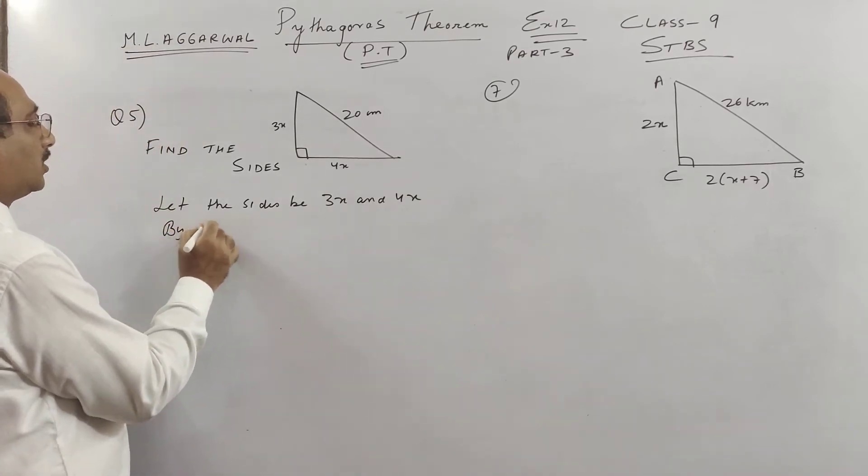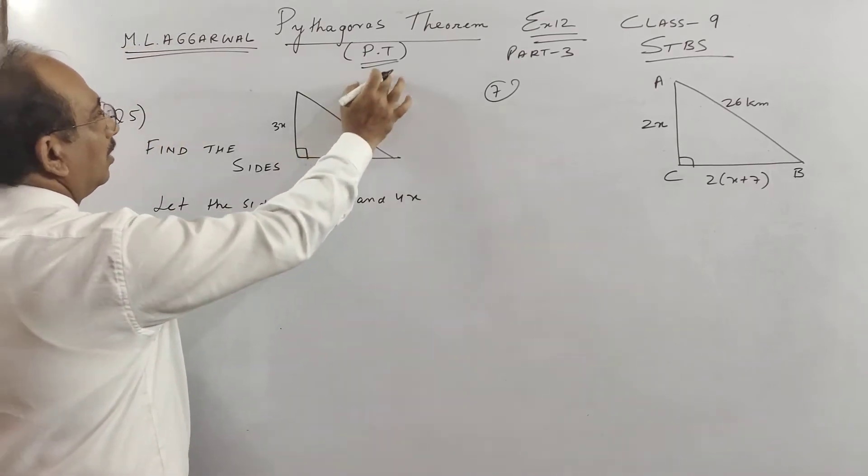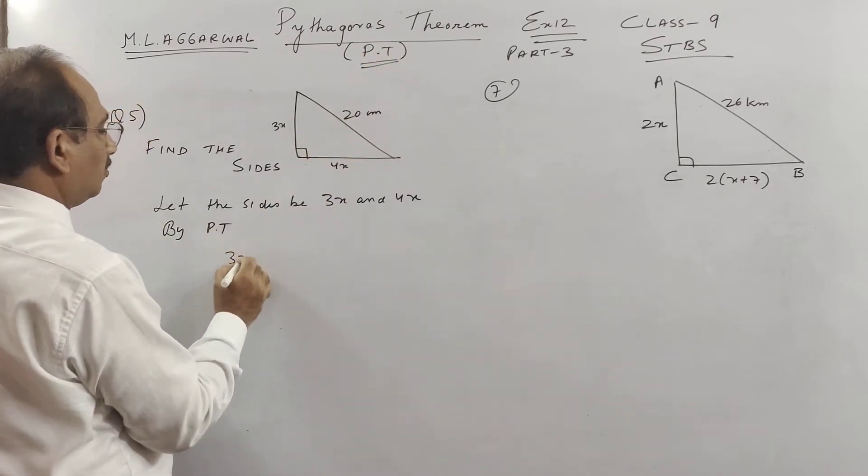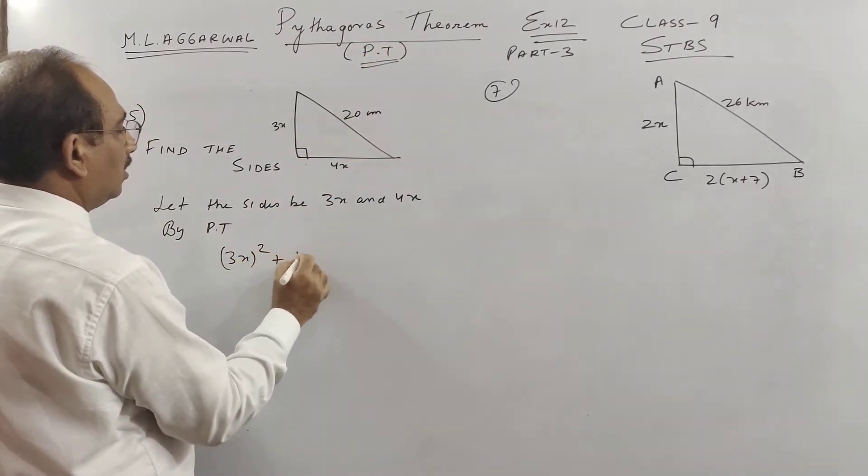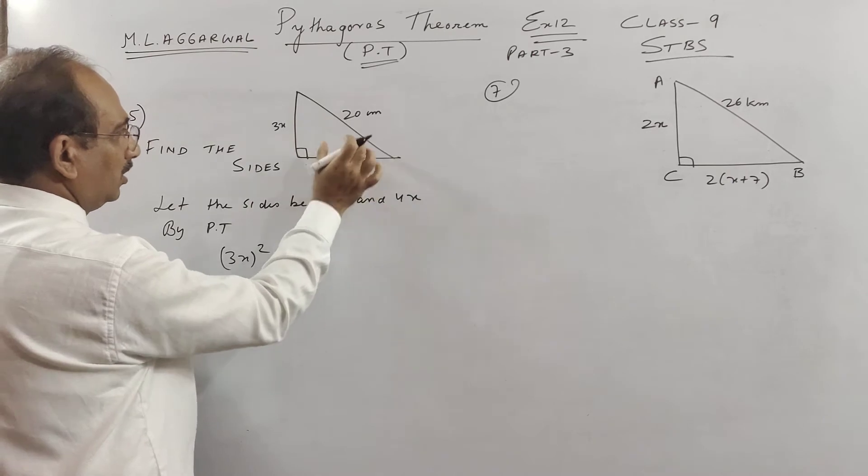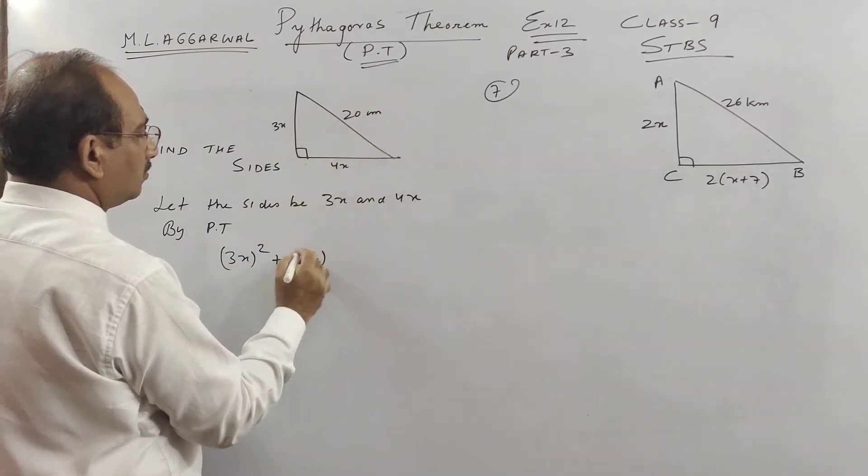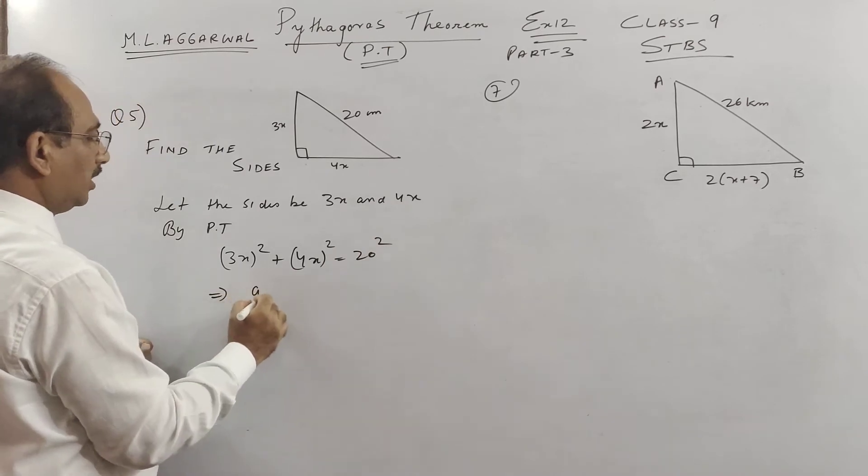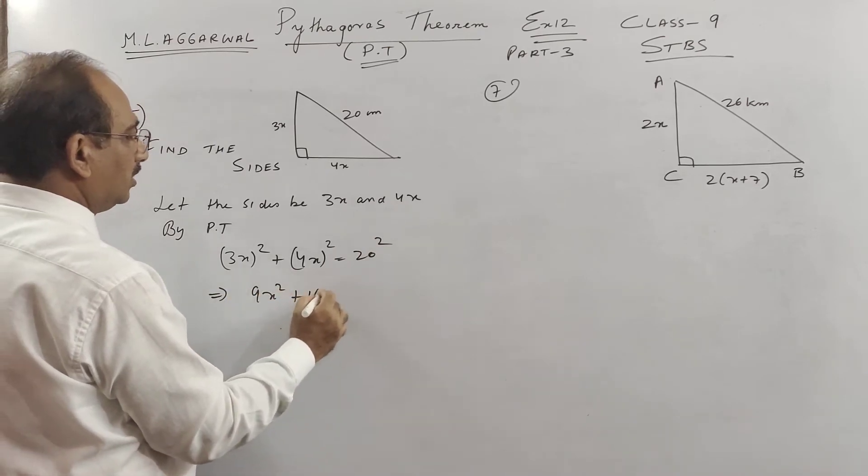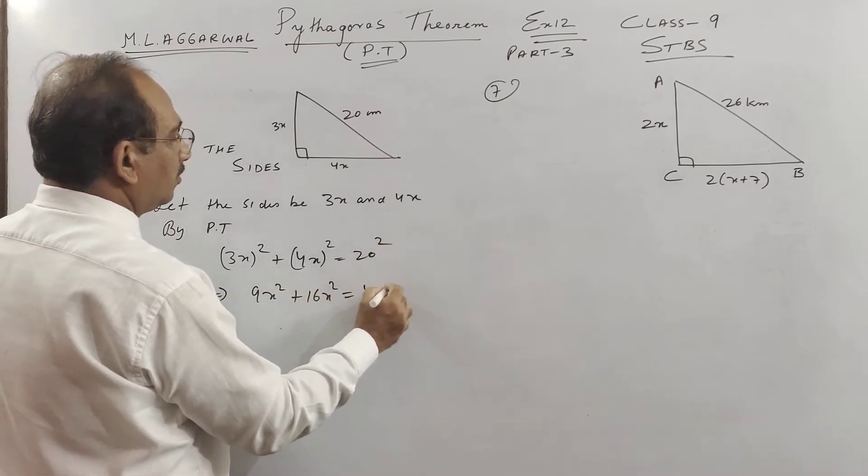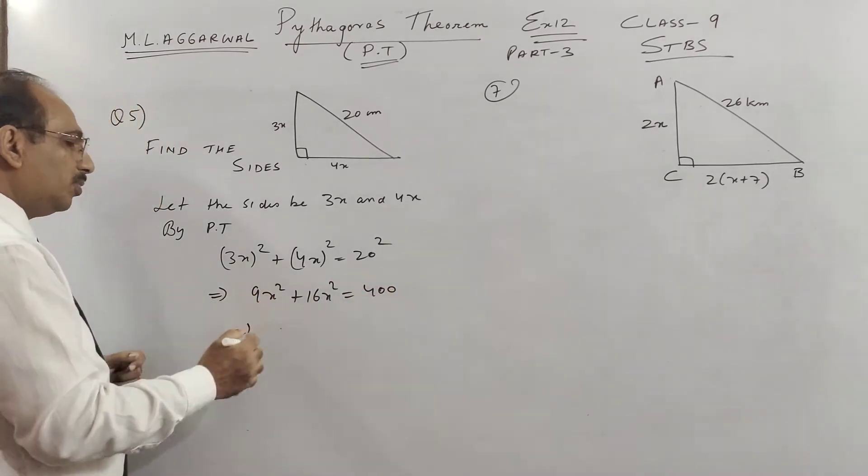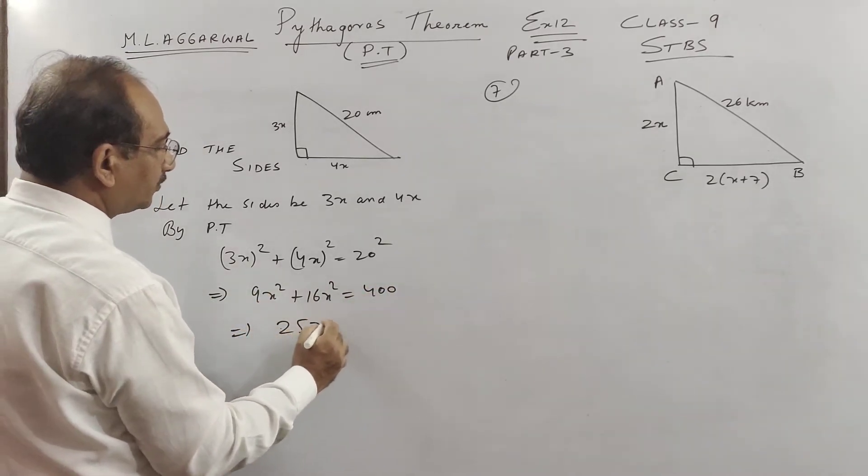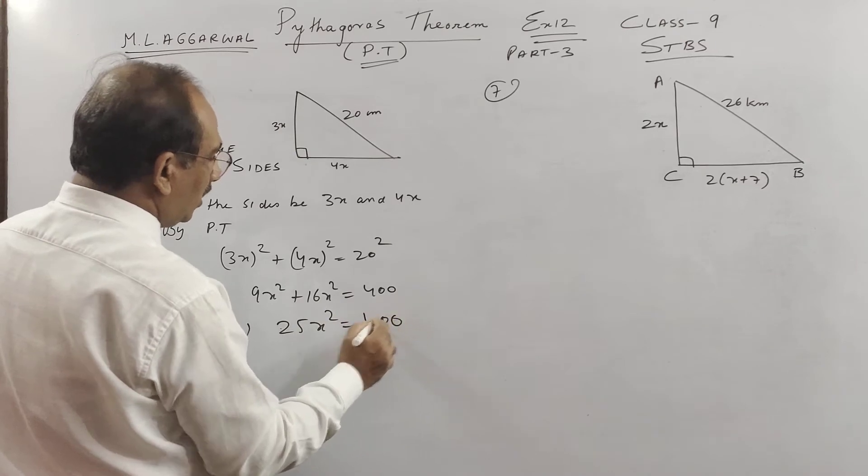So by Pythagoras theorem, I said I write in short PT, you write full Pythagoras theorem, 3x square plus 4x square is equal to 20 square. So you see here we get 9x square plus 16x square is equal to 400. So I told you you have to be very good children in square and square root also.